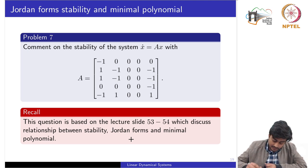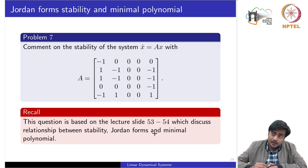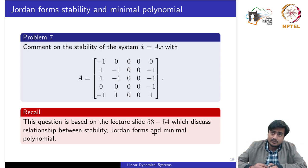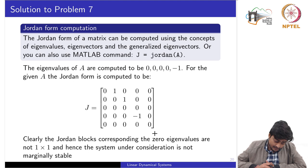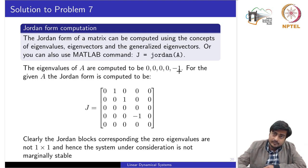If Jordan blocks for imaginary-axis eigenvalues are not all 1×1, the system is not marginally stable. We can equivalently use the minimal polynomial. Computing eigenvalues of A gives 4 repeated eigenvalues at the origin and one at −1. Using the MATLAB command jordan(A), we obtain the Jordan matrix J.